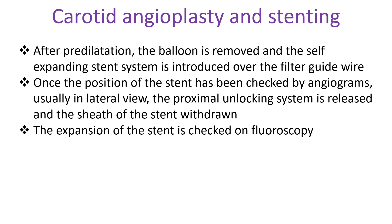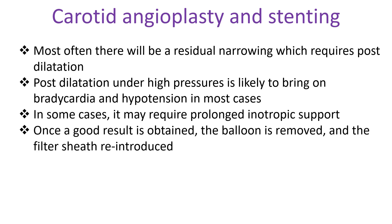After predilatation, the balloon is removed and the self-expanding stent system is introduced over the filter guide wire. Once the position of the stent has been checked by angiograms — usually in lateral view — the proximal unlocking system is released and the sheath of the stent withdrawn. The expansion of the stent is checked on fluoroscopy. Most often there will be a residual narrowing which requires post dilatation.